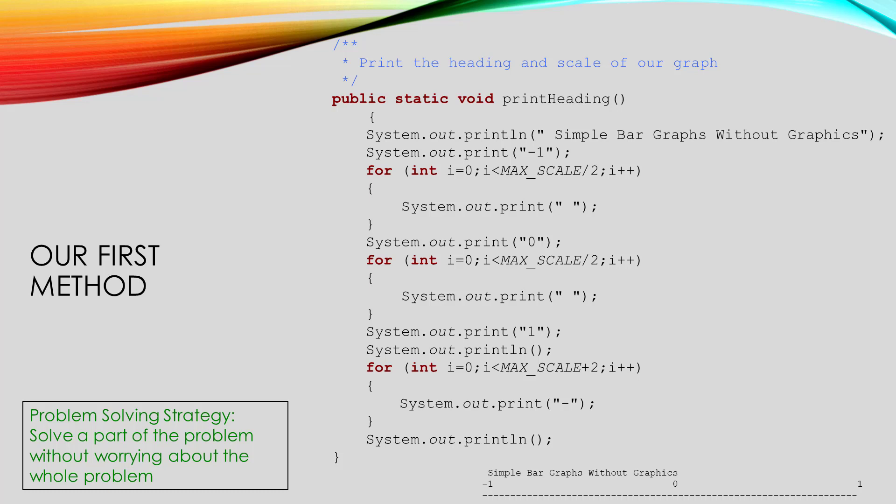You can see it down at the bottom of the screen here. The first line of the output is pretty easy. Just print out the title of the graph. The next line needs to space out the negative 1, 0, and 1 on the axis of the graph. Let's assume that we have a constant named max scale that tells us how many characters wide we want our graph to be. Essentially, we want to print out the negative 1, print out spaces for half the width, print out the 0, print out spaces for the other half of the width, and then print the 1.